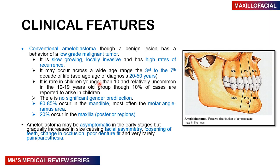There is no gender predilection — equal distribution between males and females. 80 to 85% of tumors arise from the mandible, with the most common region being the molar-angle-ramus region. As shown in the diagram, the mandible is divided into parts — the angle, the ramus, and the molar region — and 66% arise from this combined region. The next common site accounts for about 10 to 11%.